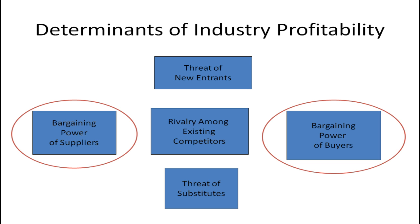In a previous video, I talked about the determinants of industry profitability and Michael Porter's Five Forces model. Here I have his Five Forces model laid out in the typical diagram that you see. What I want to do is go into a little more detail about two of the factors that determine industry profitability — that is, bargaining power of suppliers and bargaining power of buyers.